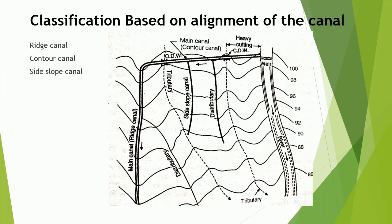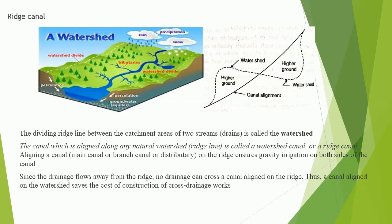Classification based on alignment of the canal: they are ridge canal, contour canal, and side slope canal. Ridge canal — the dividing ridge line between the catchment areas of two streams is called the watershed. A canal aligned along any natural watershed or ridge line is called a watershed canal or ridge canal. Aligning a canal on the ridge ensures gravity irrigation on both sides. Since drainage flows away from the ridge, no drainage crosses a canal aligned on the ridge, thus saving the cost of construction of cross drainage works.